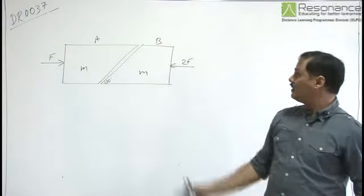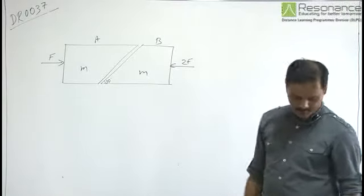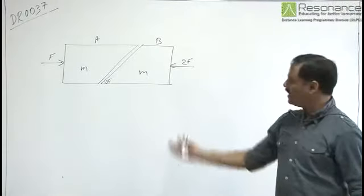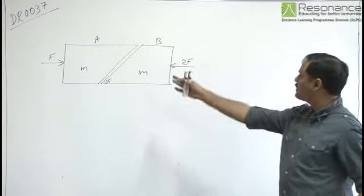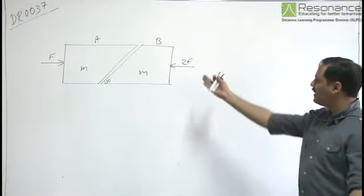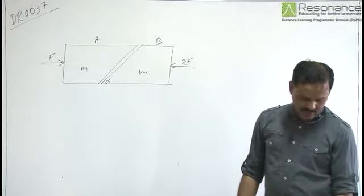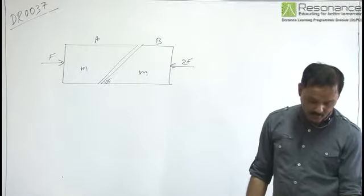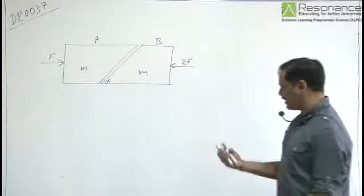In this particular question, there are two blocks A and B, each of mass M, placed on a smooth horizontal surface. Two horizontal forces F and 2F are applied on the two blocks A and B as can be seen. The block A doesn't slide on block B. Then the normal reaction acting between the two blocks needs to be found.